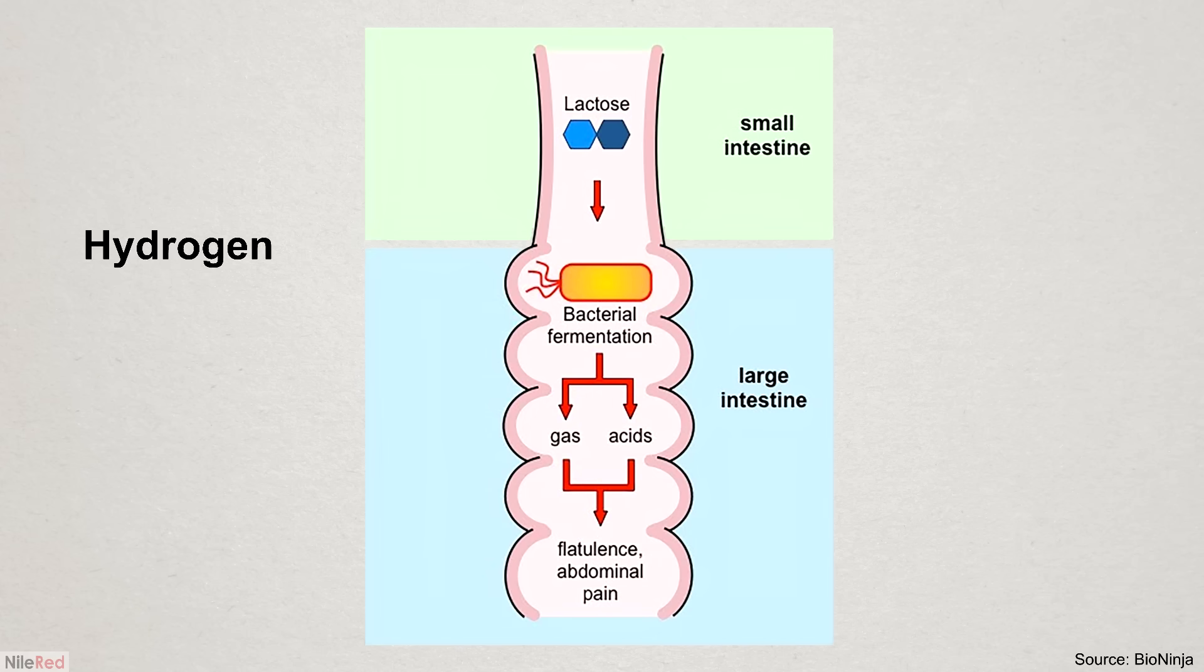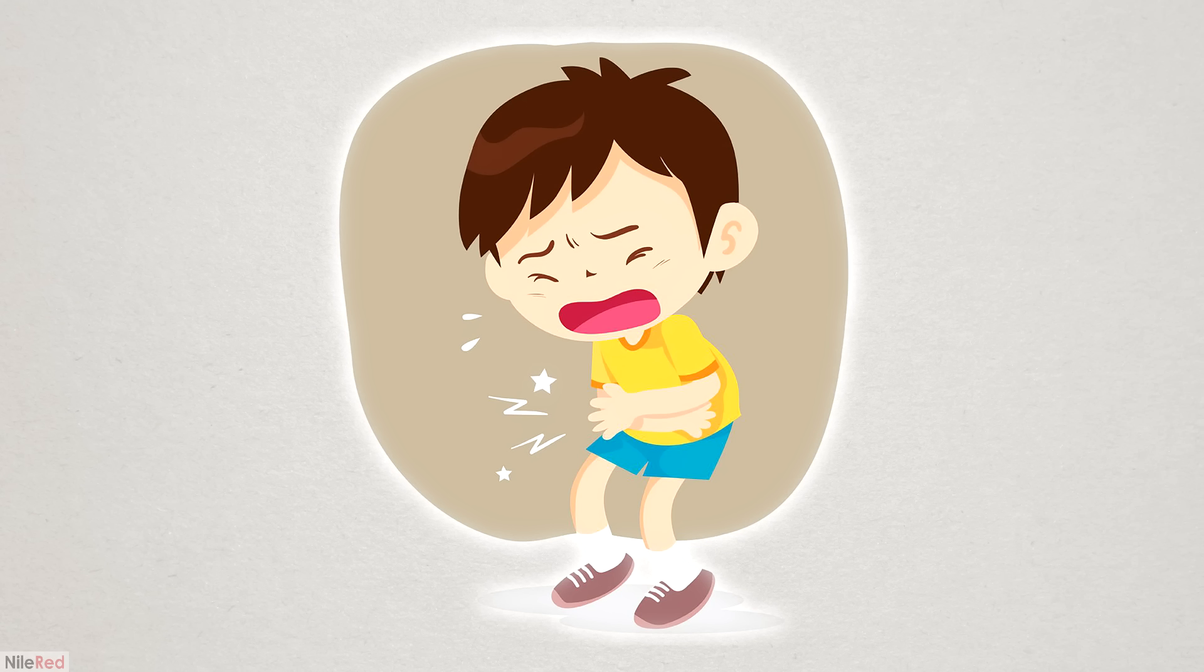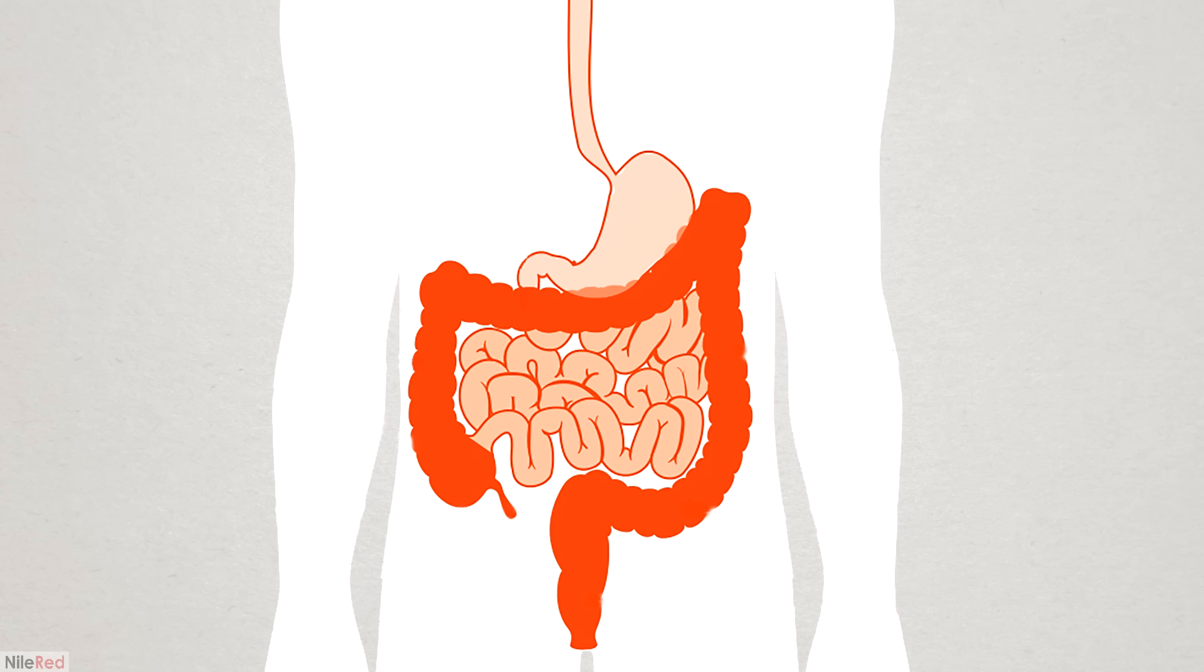This produces a lot of hydrogen, carbon dioxide and methane gas, which leads to bloating and a bunch of other abdominal problems. The lactose, as well as other non-gaseous fermentation products, will also raise the osmotic pressure in the colon, leading to an influx of water and diarrhea.